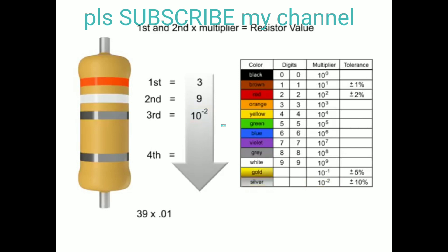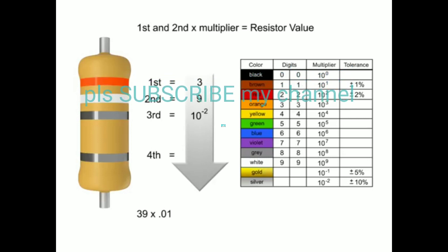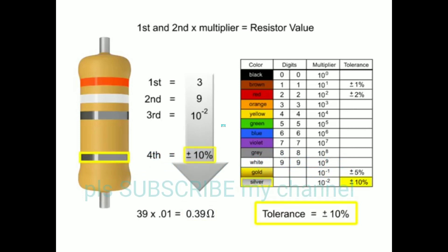In this instance we would take the 39 and move the decimal point two places to the left, resulting in a value of 0.39 ohms. Thus the value of this resistor is 0.39 ohms with a tolerance of plus or minus ten percent.